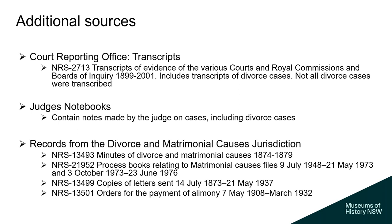Some other sources to check are court reporting transcripts — though not all divorce cases were transcribed — within series NRS 2713. Another source could be judges' notebooks, though not all judges took notes. There are also records from the divorce and matrimonial causes jurisdiction: NRS 13493, Minutes of Divorce and Matrimonial Causes; NRS 21952, Process Books Relating to Matrimonial Causes Files; NRS 13499, Copies of Letters Sent; and NRS 13501, Orders for the Payment of Alimony.